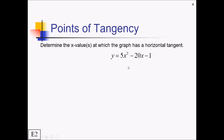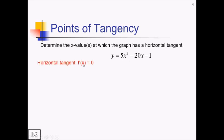For this next problem, they're asking us to determine the x-values at which the graph of this function has a horizontal tangent. So they're basically asking where the derivative equals a certain value. A horizontal tangent means a slope of 0, so I need to figure out at what x-value f′(x) equals 0.